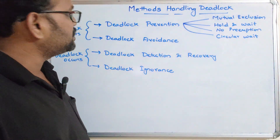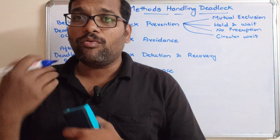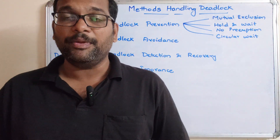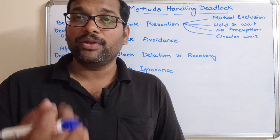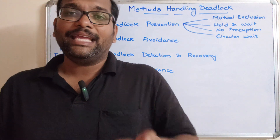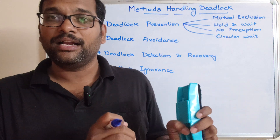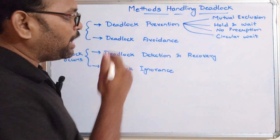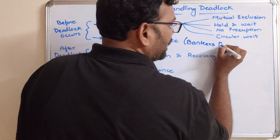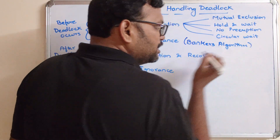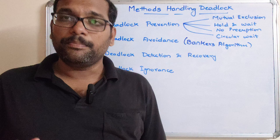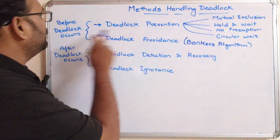Coming to the second method, deadlock avoidance: we have to collect all the resources related to the processes. If one process wants to execute, we first gather all the resources required by that process to complete its execution, then decide how to allocate those resources such that deadlock will not occur. One algorithm used for deadlock avoidance is called the Banker's Algorithm.